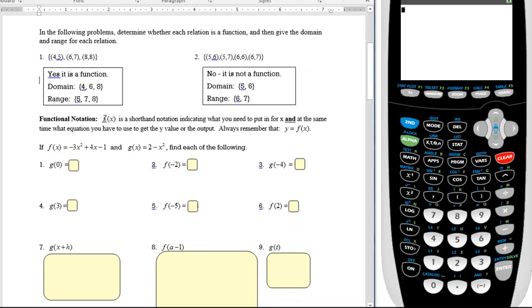Functional notation, f of x, this is not multiplication, it's f of x, is a shorthand notation indicating what you need to put in for x, and at the same time what equation you have to use to get the y value or the output. Always remember that y equals f of x. So f is sort of like a functional name, I've got f of x here, I've got g of x here. The x will be given, so I need to look at some of these problems. We're going to try some in our heads, some with the calculator that I've got on the side by storing. So let's go for it.